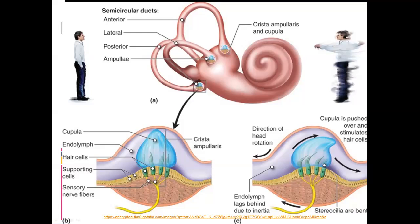Within the semicircular canals, there are swellings at the base and within that we get the crista. If you are stationary, the crista are in a normal position. But once you move in a particular direction, the fluid in at least one of the semicircular canals will move as a result, causing the crista to bend. When the crista bends, it stimulates hair cells, converting the stimulus into an impulse. The cerebellum picks up which semicircular canal has moved, determining the direction of body movement. Moving faster causes more fluid movement and more bending, detected as a higher speed.